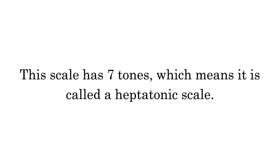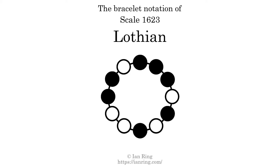This scale has 7 tones, which means it is called a heptatonic scale. This is a bracelet notation diagram of scale 1623. The shaded circles represent tones that appear in the scale, and they are read clockwise, starting at the top.